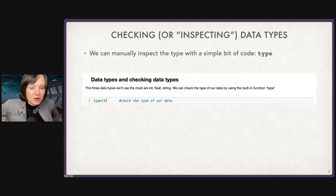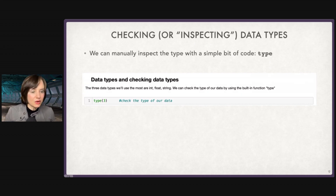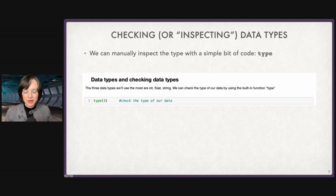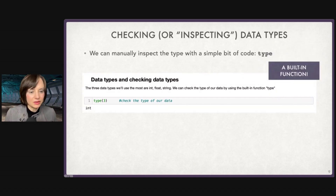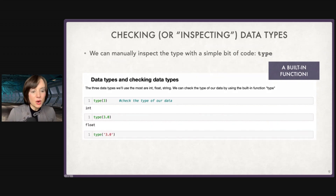Let's code. We can manually inspect what type of data we're working with using the code type(). Type shows up in green, so we know it's a built-in function — it evaluates the type of whatever is in the parentheses. Type of 7 is int. Type of 3.0 is float. Type of '3.0' in quotes is string.